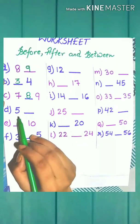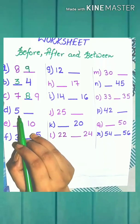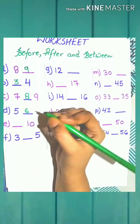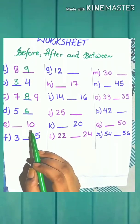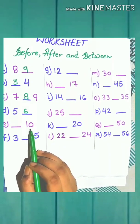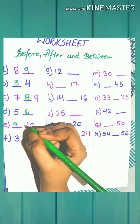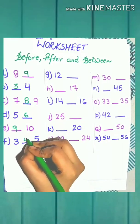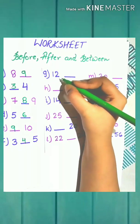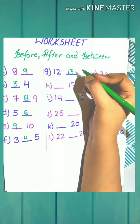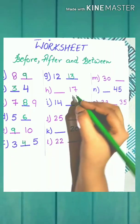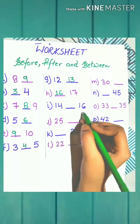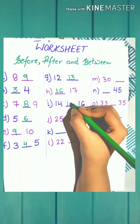What comes after 5? Good! 6. What comes before 10? Yes! 9. What comes between 3 and 5? 4, good! What comes after 12? 13. What comes before 17? Yes! 16. What comes between 14 and 16? Yes! 15.